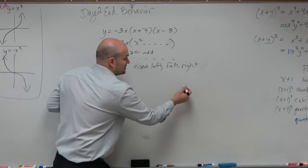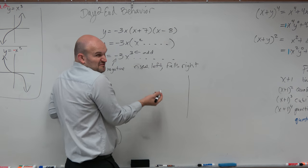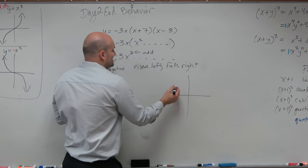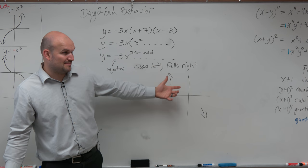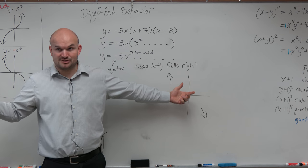But again, we don't know what the graph looks like, though, do we? We didn't even fill it out. So we have no idea what this graph looks like. But the only thing we know is that it shares the same end behavior as negative x cubed.